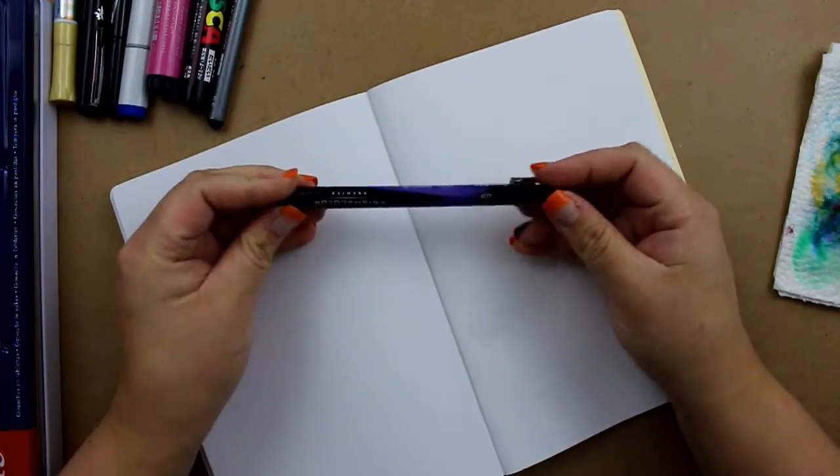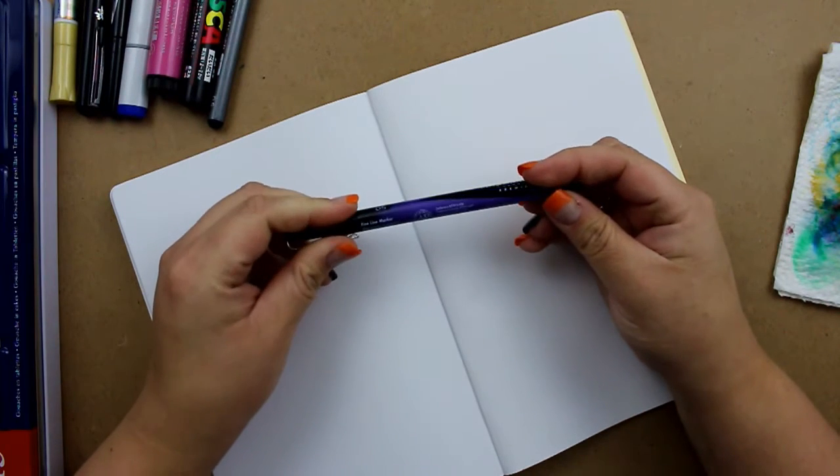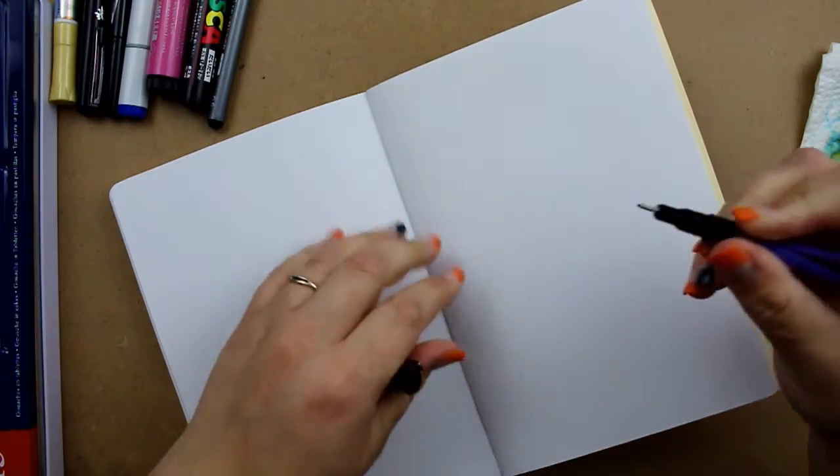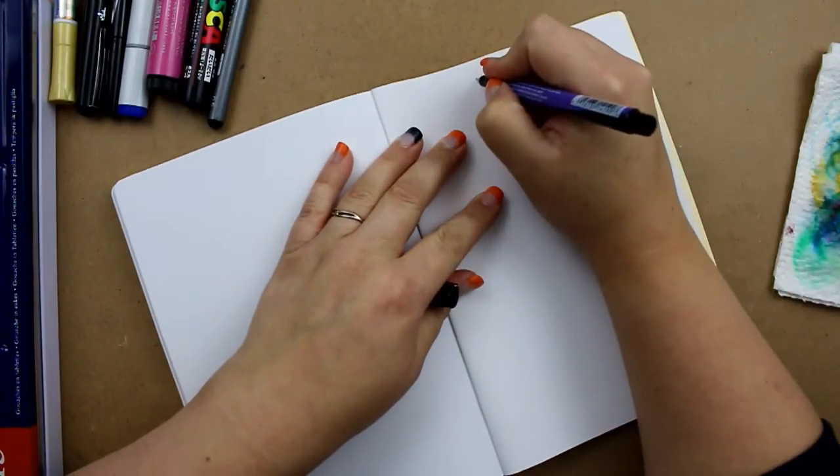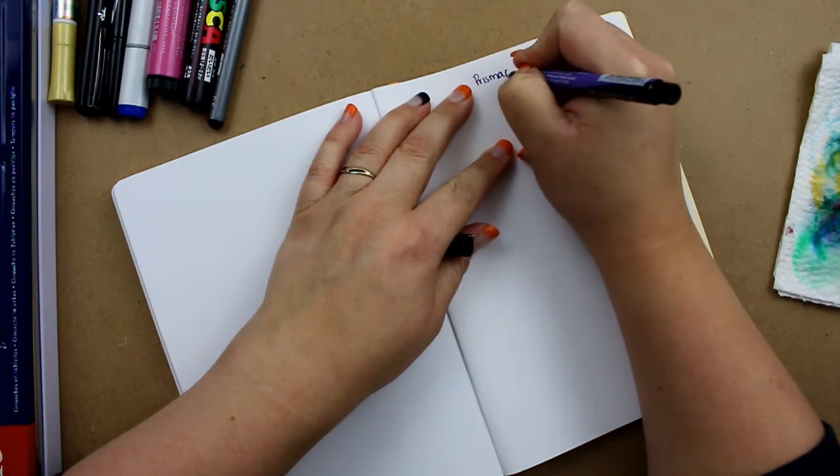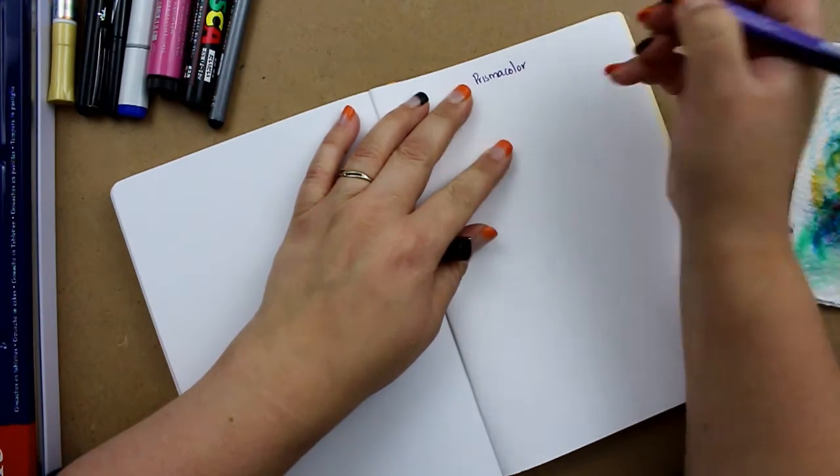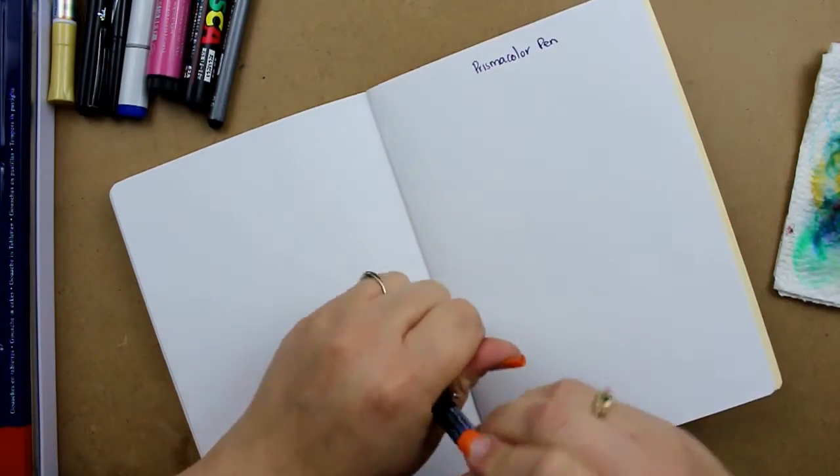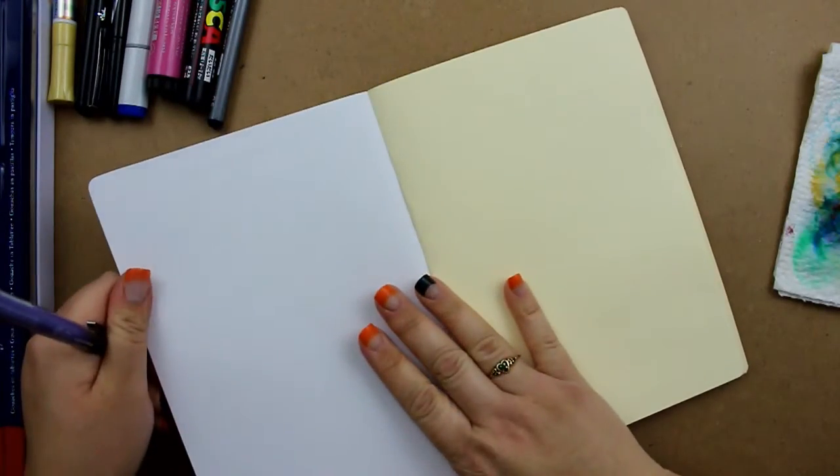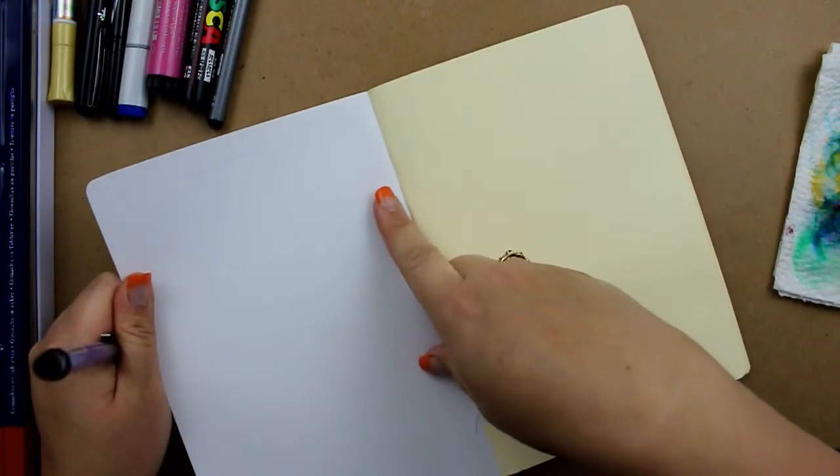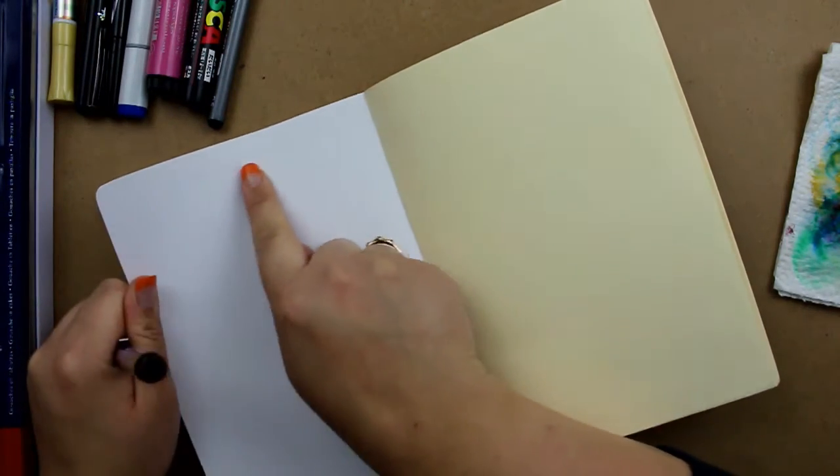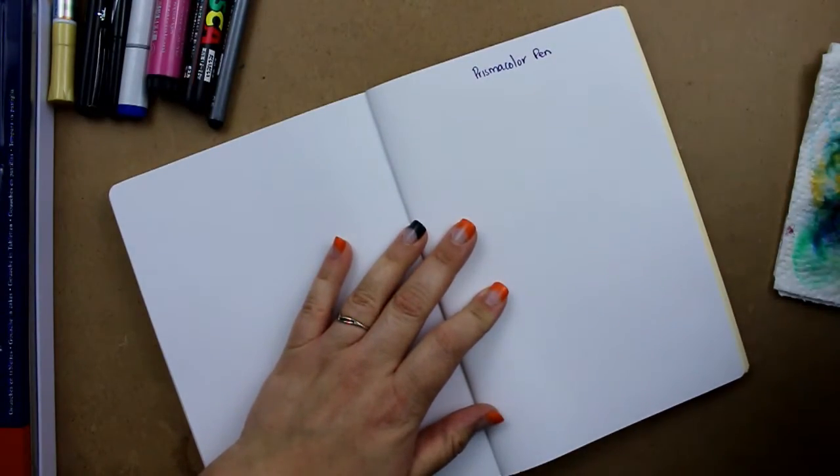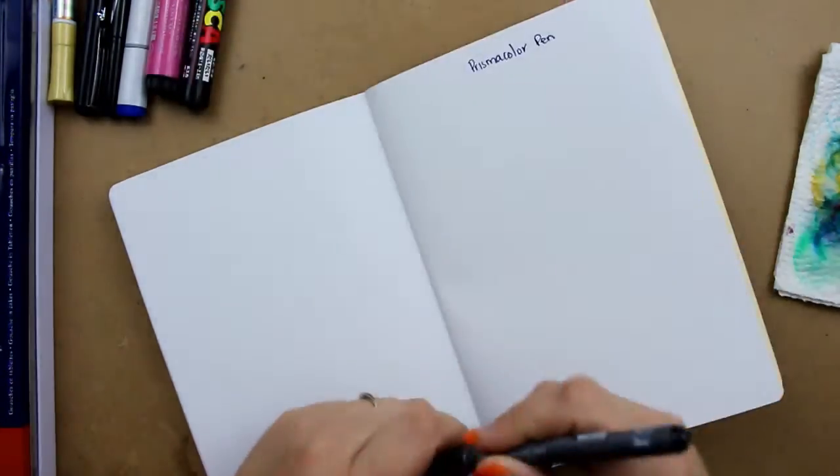So the first thing I have here is Prismacolor Premier. I think this is a pigment marker. It's a fine line marker. I'm just going to write what it is. And I'm just going to flip the page over and it goes through just slightly, but it's not too horrible. I can just vaguely see it through. So it didn't really bleed through, but if you're going to use ink, it seems like that you're not going to be able to use both sides of the paper.